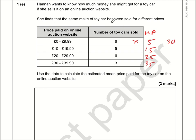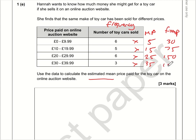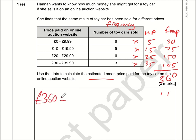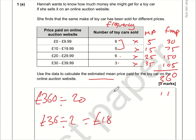I'm working out frequency times midpoint — two separate columns. Multiplying across: 5 times 15 is 75; 6 times 25 is 150; 3 times 35 is 105. Now I add all frequency×midpoint values: zero plus five plus zero plus five is 10, carry one; adding across gives an estimated total of £360. There are 20 items in total (6+5+6+3=20), so 360 divided by 20 is the same as 36 divided by 2 — an estimated mean of £18.